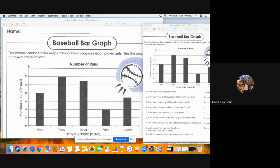And then the last one says list the players in order from fewest runs to most runs. So you're going to go from the least amount of runs to the highest amount. So you just put the players in order from smallest numbers to biggest numbers using the graph.